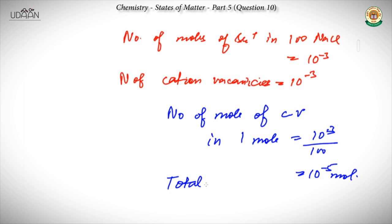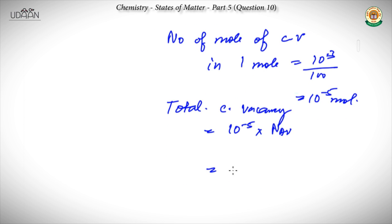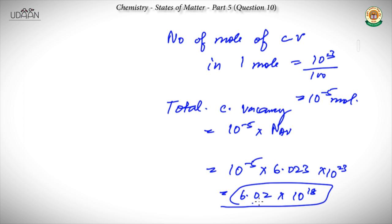The total number of cationic vacancies comes out to be 10 to the power minus 5 into Avogadro's number, which equals 10 to the power minus 5 into 6.023 into 10 to the power 23, giving 6.023 into 10 to the power 18. So 1 Sr²⁺ replaces 2 Na⁺ and creates 1 cationic vacancy. We multiply by Avogadro's number to calculate the total cationic vacancies created.